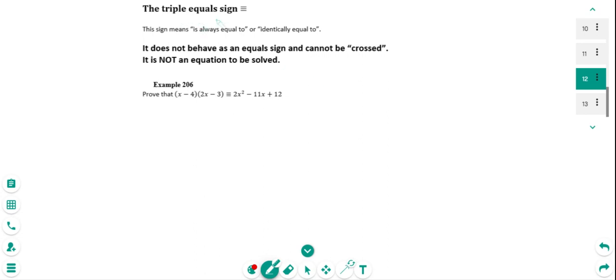So I'm now going to look at proofs where I've got the triple equals sign. I talked about this earlier in one of the trig examples. But just to reiterate what that means is, it says here it's always equal to or identically equal to.